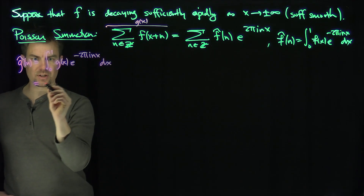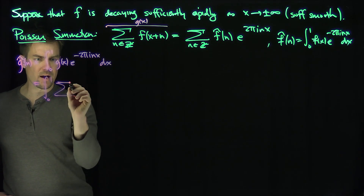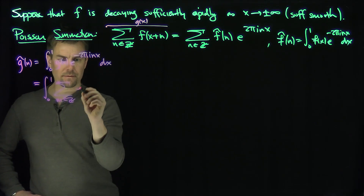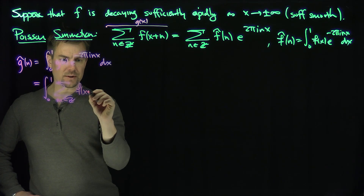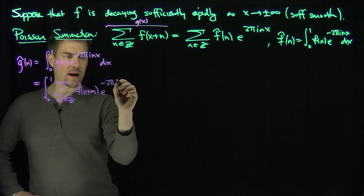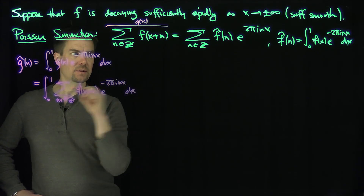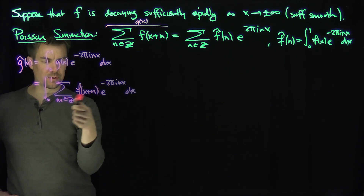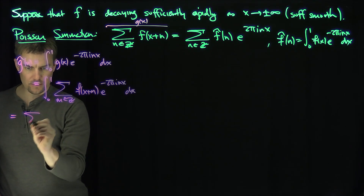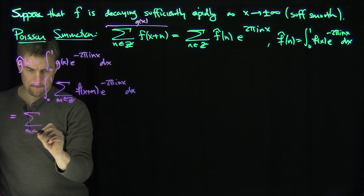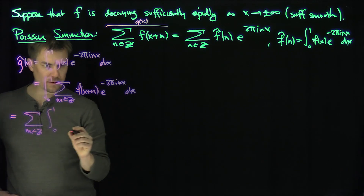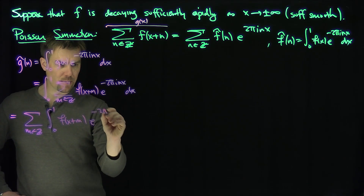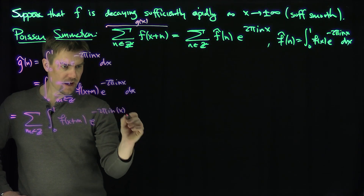Now I can plug in this representation. This is going to be the integral from 0 to 1 of the sum over m in Z of f of x plus m times e to the minus 2 pi i n x dx. Now this sum, by the decay at infinity and the smoothness of f, I can interchange the limits of integration and summation. This gives the sum over m in Z of the integral from 0 to 1 of f of x plus m times e to the minus 2 pi i n x dx.